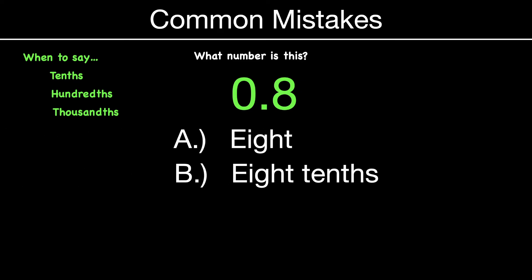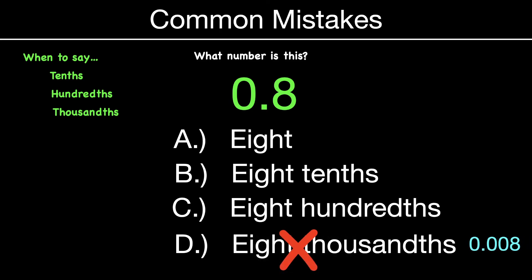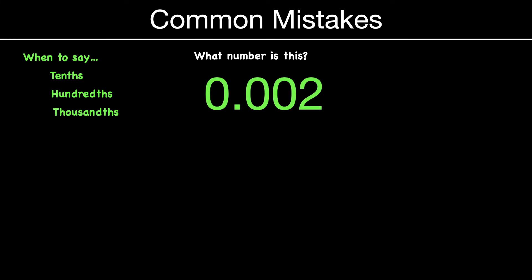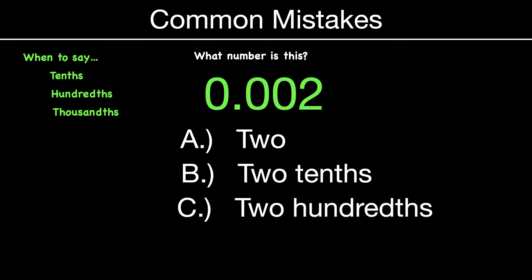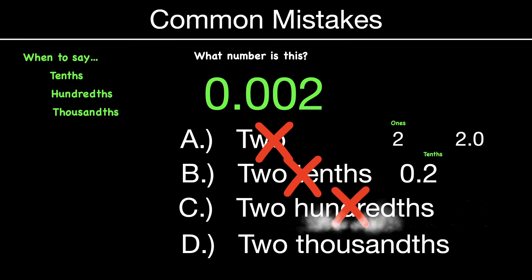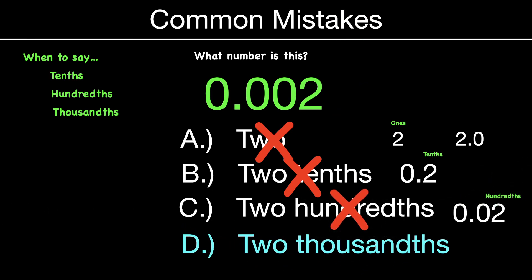How about this one? Is it just eight, eight tenths, eight hundredths, or eight thousandths? Not eight thousandths — that's way over. Eight would be a whole number. Not eight hundredths — hundredths would be two over. So this is eight tenths because the eight is in the tenths place value. One more: two, two tenths, two hundredths, or two thousandths? Not two — that's a whole number on the left. Not two tenths, not two hundredths. So this would obviously be two thousandths because the two is in the thousandths place value. Thanks for watching today. Appreciate it if you made it this far — great job, and we'll see you on the next one.